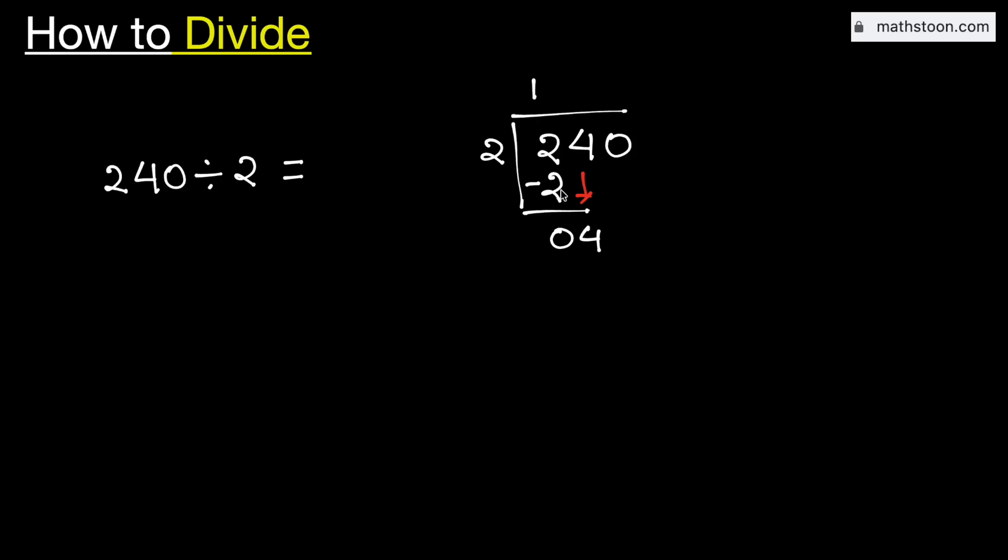Now see that this is the number 4. So we remove this 0. And we know that 2 times 2 is 4. Subtract, we get 0.